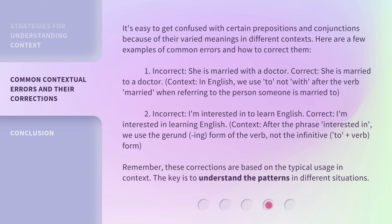Second: Incorrect — 'I'm interested in to learn English.' Correct — 'I'm interested in learning English.' After the phrase 'interested in,' we use the gerund (the -ing form of the verb), not the infinitive (to + verb) form. Remember, these corrections are based on the typical usage in context.